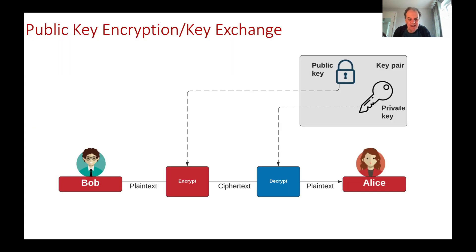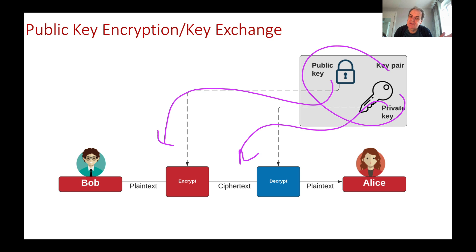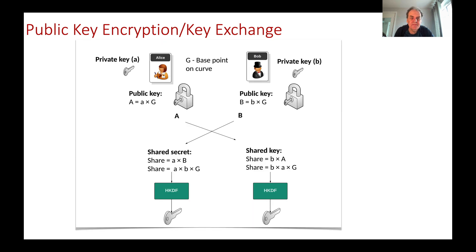Public key encryption is fairly standard: we have a key pair, we encrypt with one key and decrypt with the other. Public key encryption involves using Alice's public key to encrypt and Alice's private key to decrypt. For signatures, we reverse that — we take a message and use Alice's private key to sign it, and use Alice's public key to verify the signature. We also use public key encryption within elliptic curve Diffie-Hellman for key exchange, where Bob and Alice exchange public keys and, using a key derivation function, end up with the same shared key.